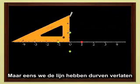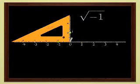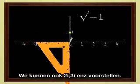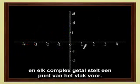But once we have the courage to leave the line, everything else is easy. We can represent 2i, 3i, and so on. Each point in the plane represents a complex number. And conversely, each complex number defines a point in the plane. Points in the plane become numbers in their own right.